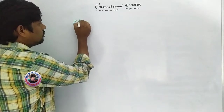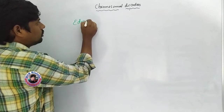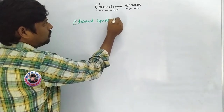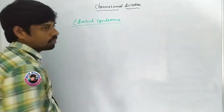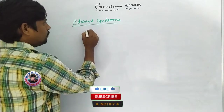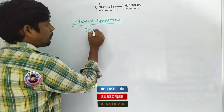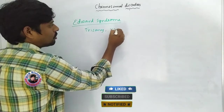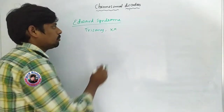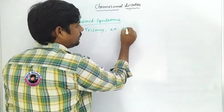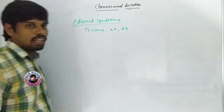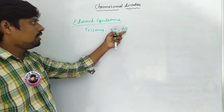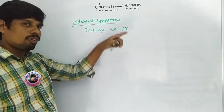Next is Edward syndrome. In Edward syndrome, this is a trisomy — XX chromosome plus 18. The additional chromosome is a normal trisomy 18 chromosome, which is actually a random type.